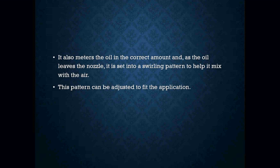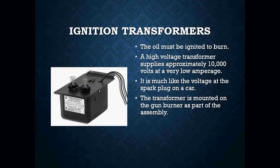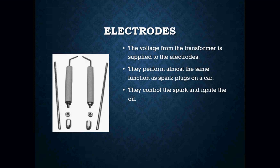The pattern can be adjusted to fit a specific application. Your ignition transformer — oil has to be ignited — is a high-voltage transformer that supplies approximately 10,000 volts at a very low amperage, much like the voltage at the spark plug of a car. The transformer is mounted on the gun burner as part of the assembly. Your electrodes receive the voltage from the transformer and perform almost the same function as a spark plug in a car — they control the spark and ignite the oil.